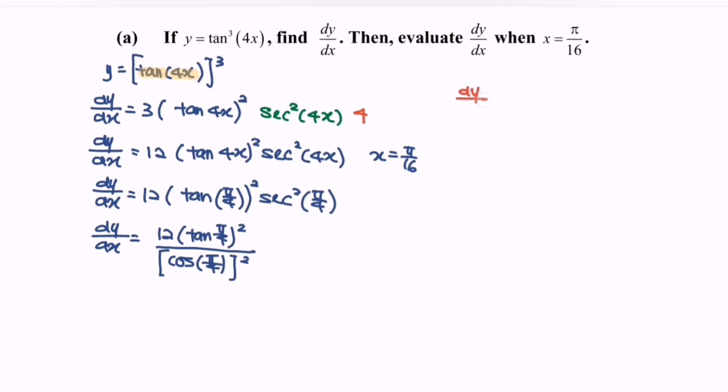So dy dx is equal to 12 over 2 over 4, where we have 1 over 2. So finally, dy dx is equal to 24 when x is equal to pi over 16.